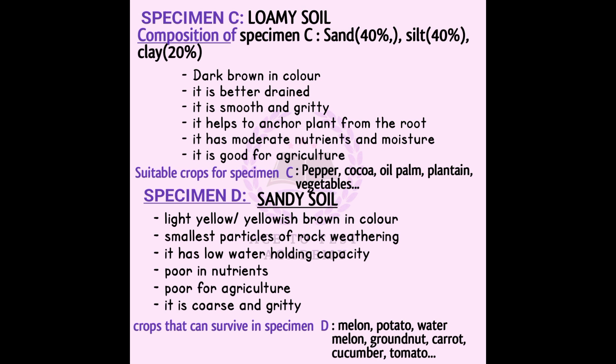Loam soil is suitable for growing pepper, cocoa, oil palm, plantain, and mostly vegetables. Sandy soil, on the other hand, is light yellow in color. It is the smallest particle of rock, has low water capacity, is poor in nutrients, poor for agricultural purposes, and is coarse and gritty.